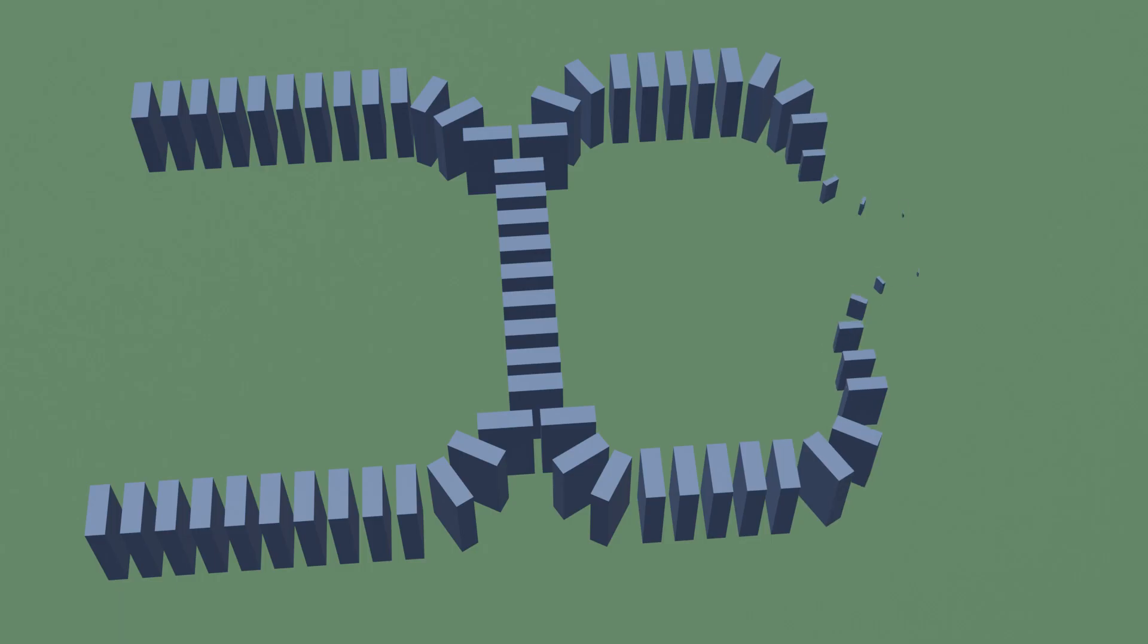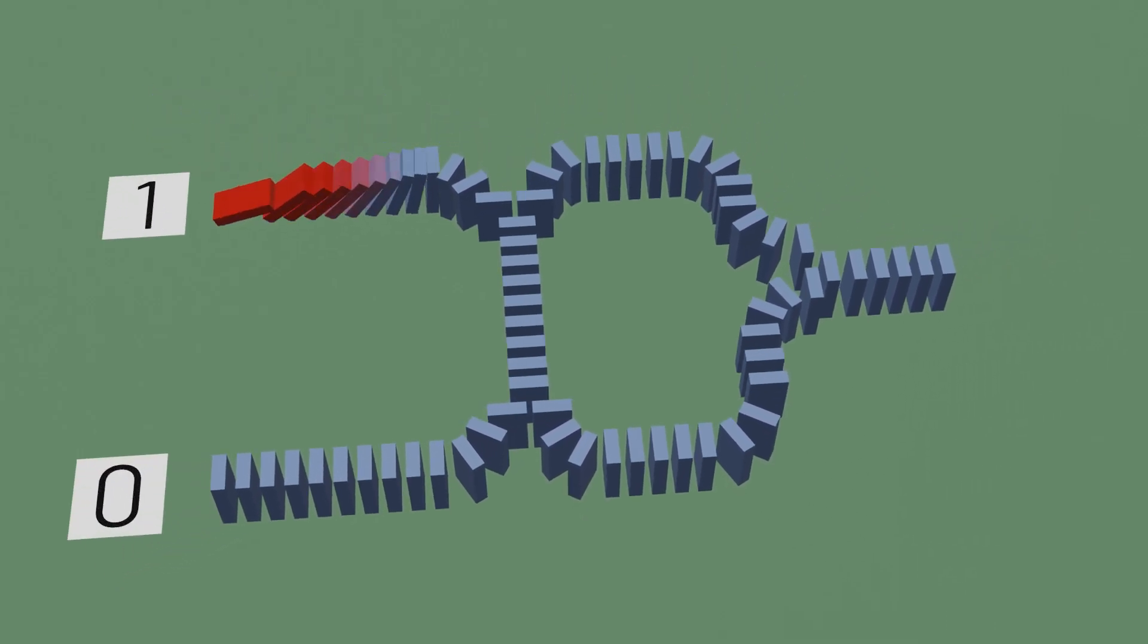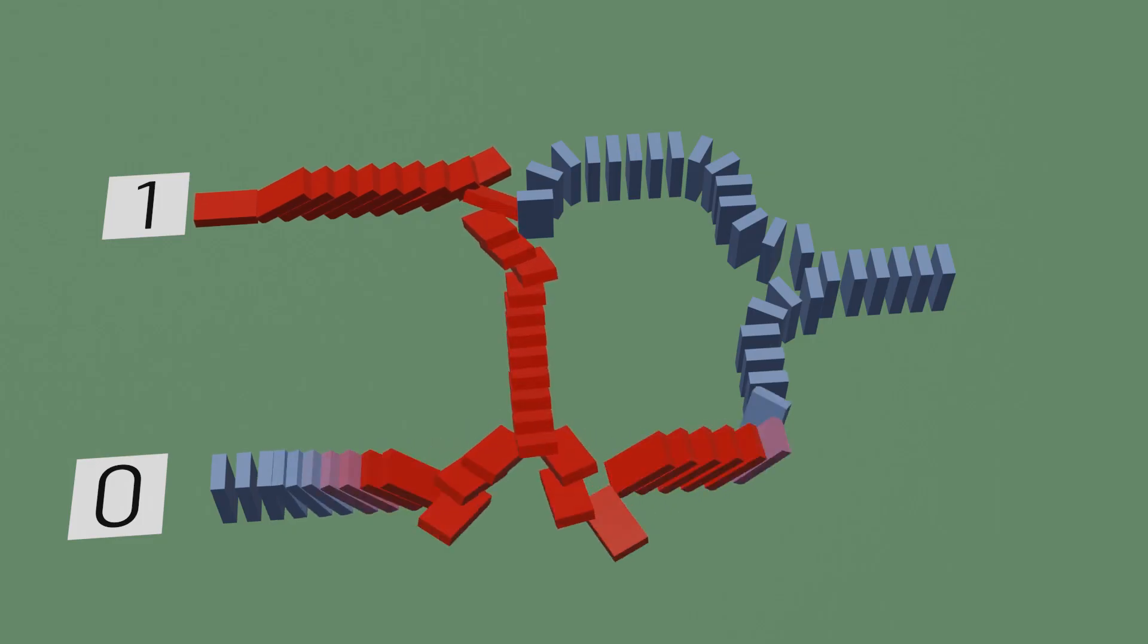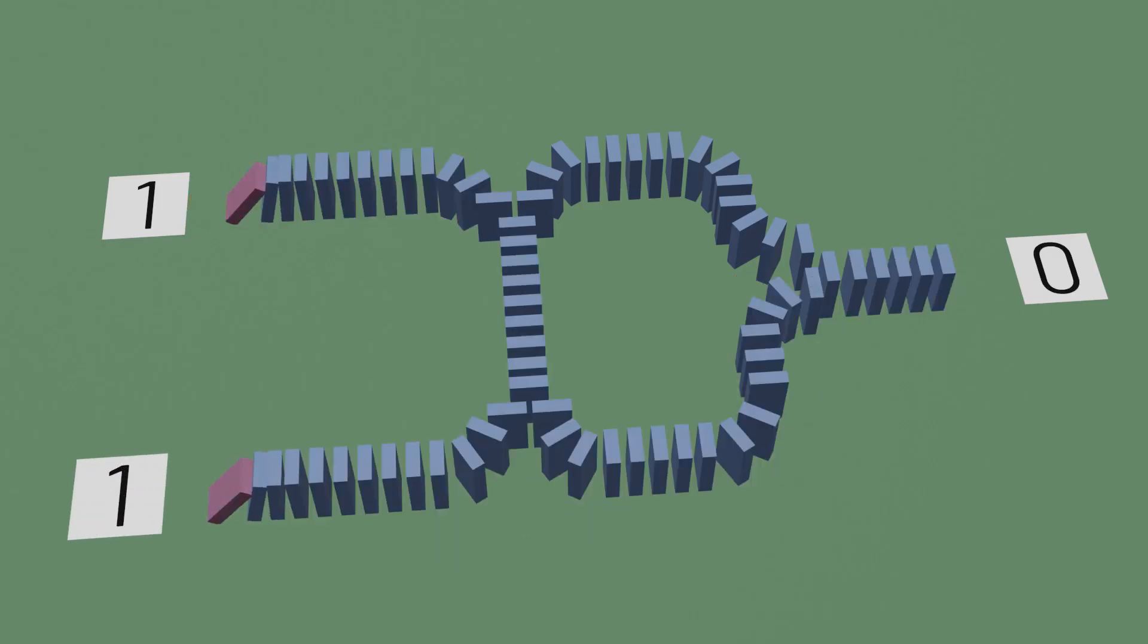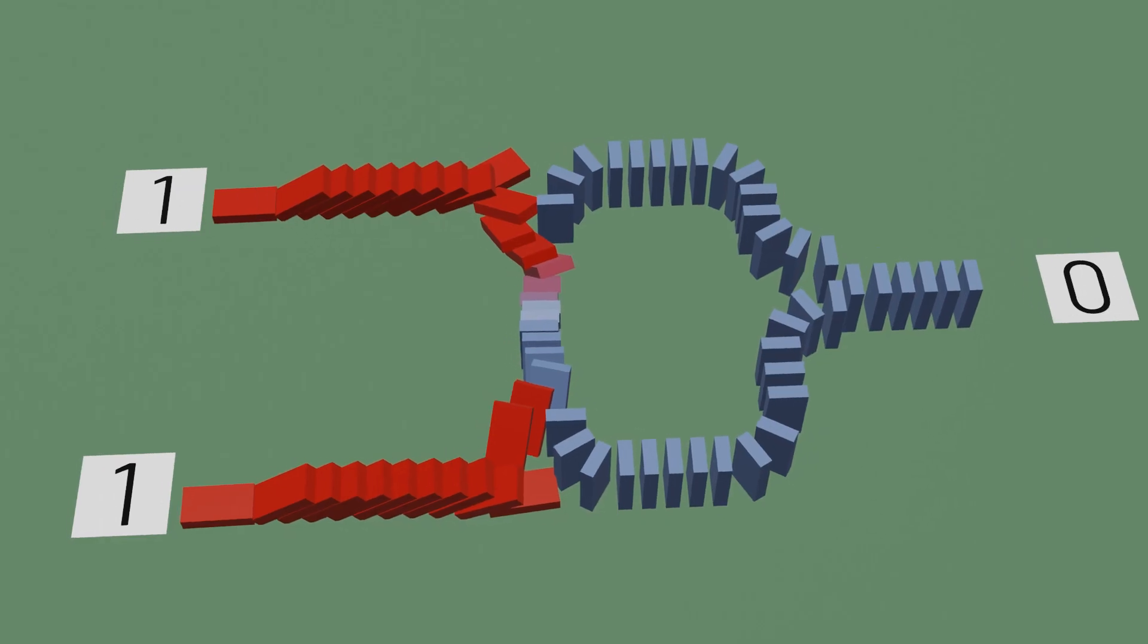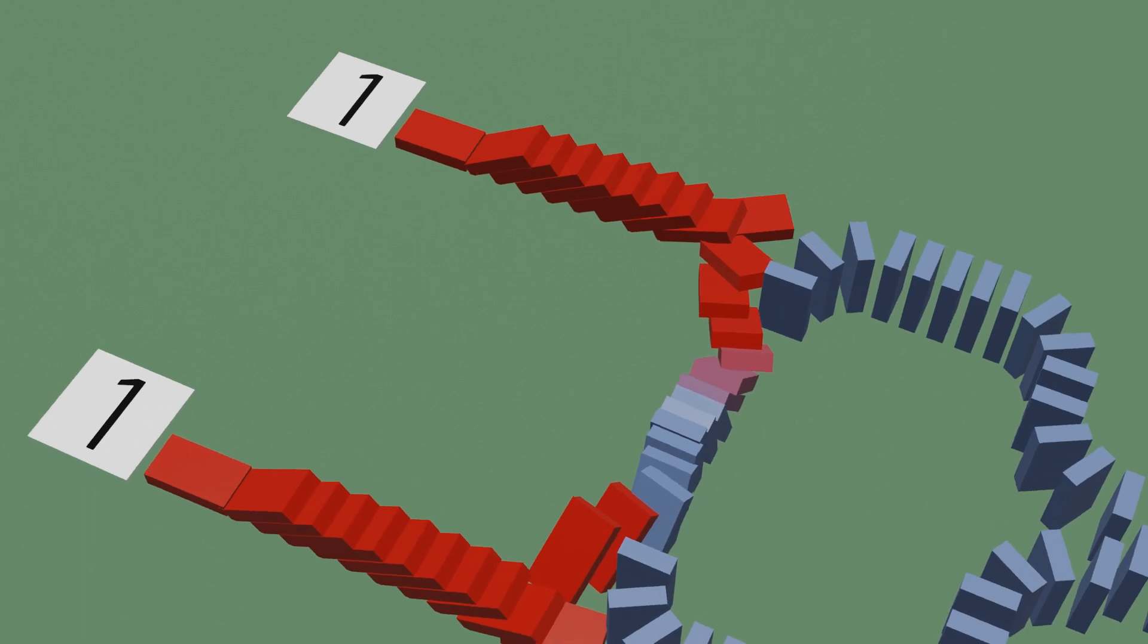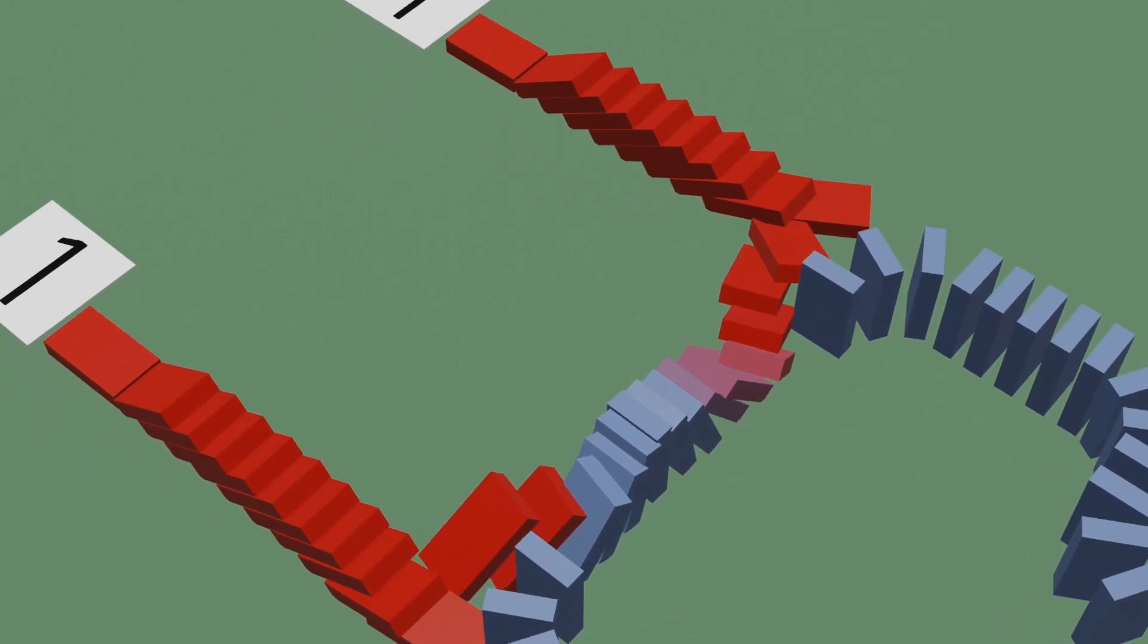To build that in dominoes, we can have the two inputs cross paths with each other in such a way that they'll collide if both are pushed. If only one input is pushed, the dominoes travel around the corresponding curve, and the output is a 1, as it should be. But if both inputs are pushed, the two paths collide with each other and stop in the middle. As a result, the output falls over when either one of the inputs is pushed, but does not fall over when both inputs are pushed.